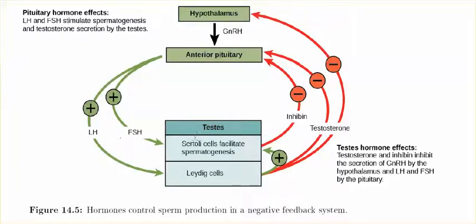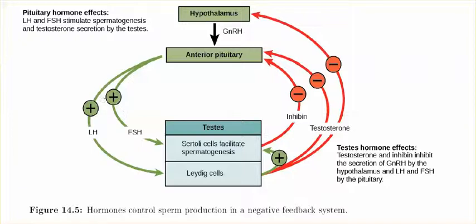How do you maintain regulation with regards to the activity at the level of the testes? The Leydig cells produce testosterone, and that testosterone will feed back in a negative manner at two points. The first is at the level of the anterior pituitary gland to decrease secretions of FSH and LH. The other is at the level of the hypothalamus to decrease the release of GnRH. The idea is we have negative feedback control — if testosterone levels are high, there's no need to keep churning out more testosterone and more sperm, so we would see a reduction in FSH and LH.